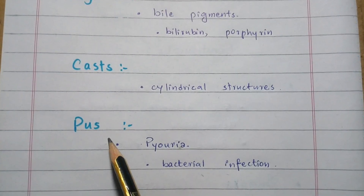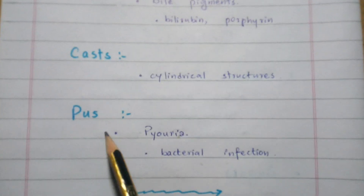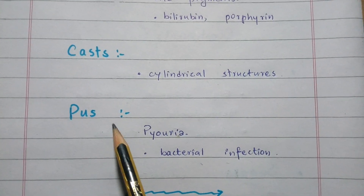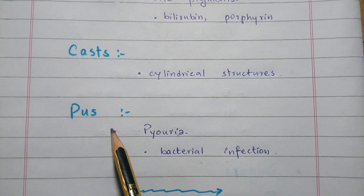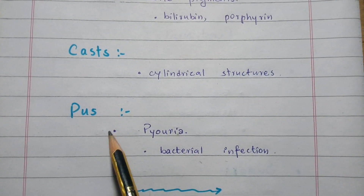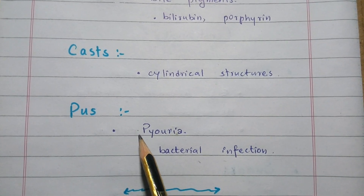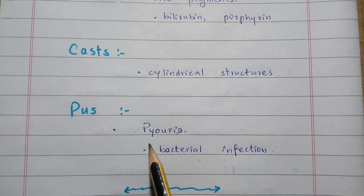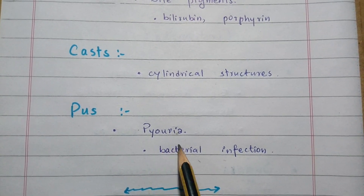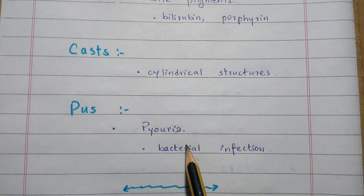The last point is pus. The presence of pus in the urine is called pyuria. Pyuria indicates bacterial infection.